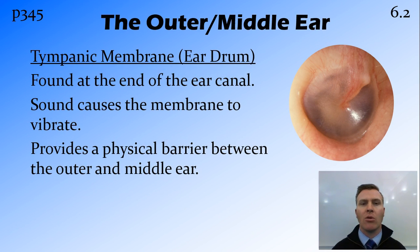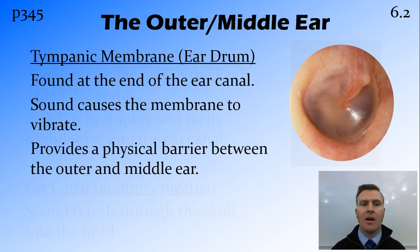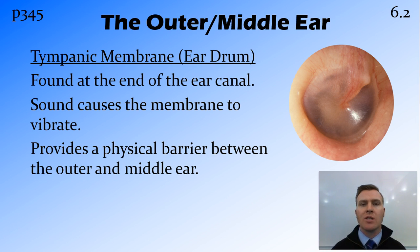Once we get to the tympanic membrane or the eardrum, the tympanic membrane becomes the end of the outer ear, or the threshold between the outer and the middle ear. The sound wave, being the vibrations in the air, causes that membrane to vibrate. And it also provides the function of being a physical barrier between the outside world and the inside of your ear, so it should stop things from getting into your ear, as well as stop infection and things like that.